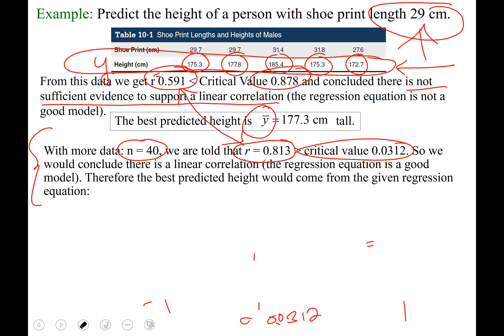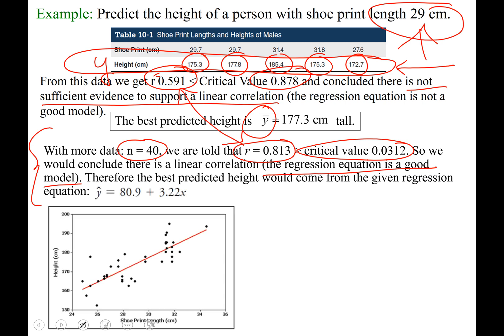The point is, you check where your lowercase r falls on the graph. If it is not a correlation, then you do not use the equation. If you check where lowercase r is on the graph and it makes it into the correlation region, then you do use the equation. Here we have the regression equation is a good model. Therefore, to make any predictions, we will use that equation.